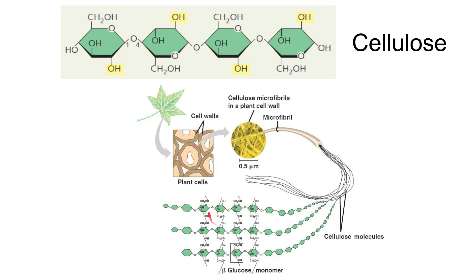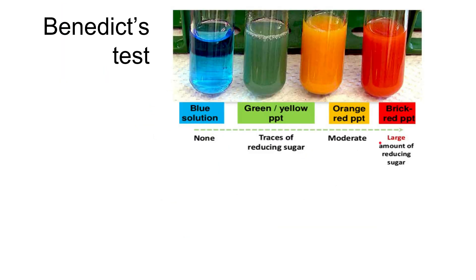Having lots of cellulose chains side by side forming hydrogen bonds produces a very strong molecule. Where these chains lie side by side, this is known as a microfibril, and it is microfibrils wrapped around the plant cell that form the cell wall. The cellulose gives the cell wall great strength due to its long, straight, hydrogen-bonded chains. However, as you can see in the photograph, there are spaces between the microfibrils, so the cell wall is fully permeable to anything that needs to enter or leave the cell.